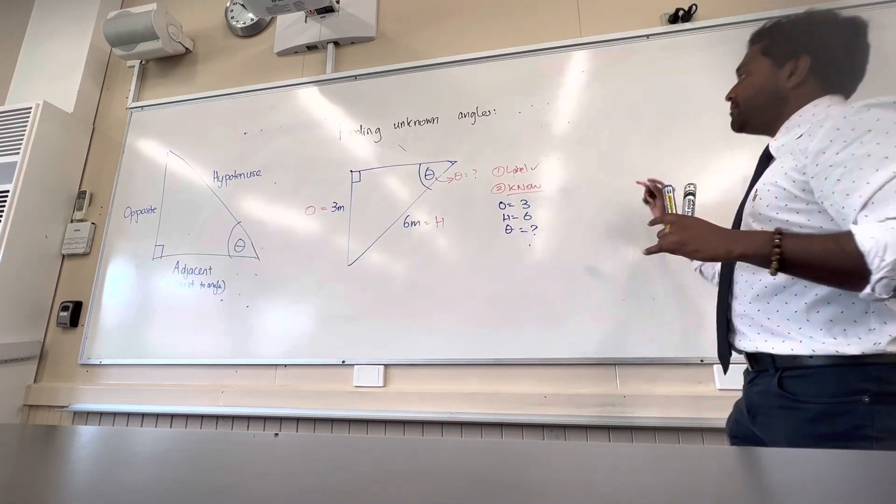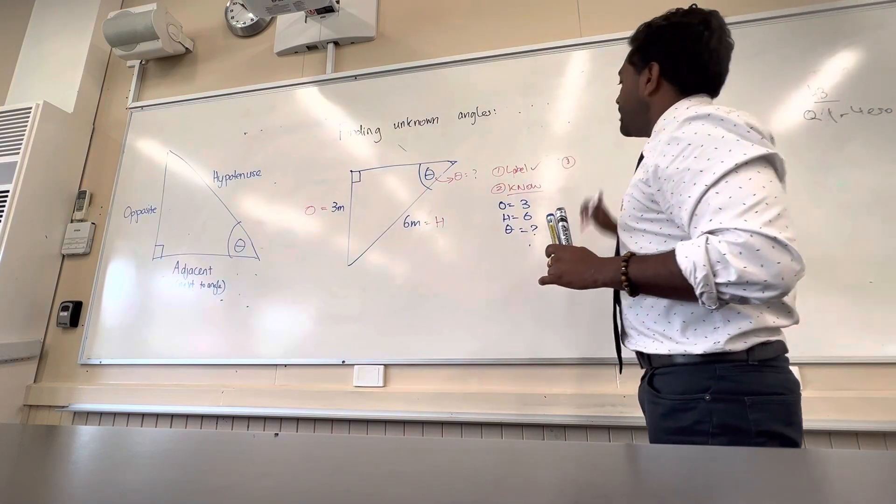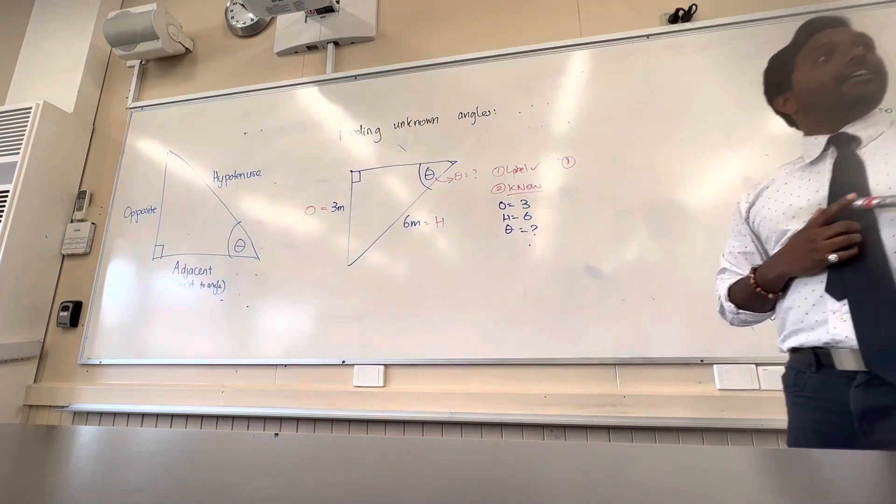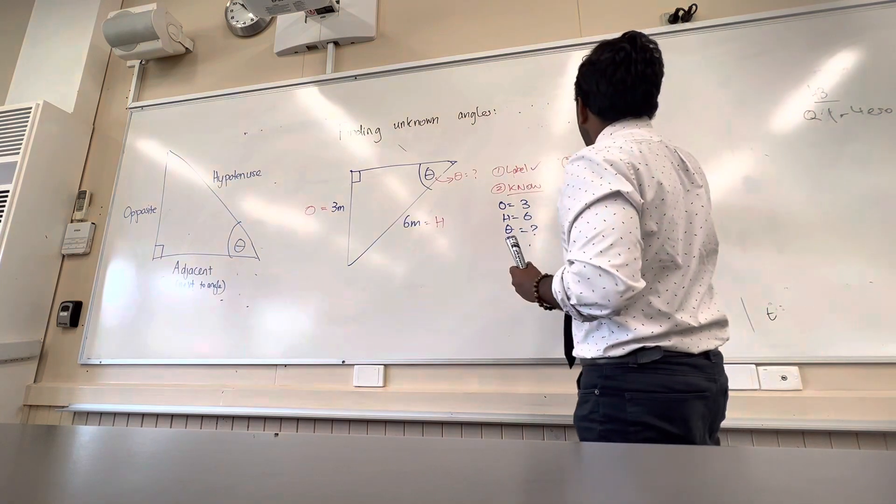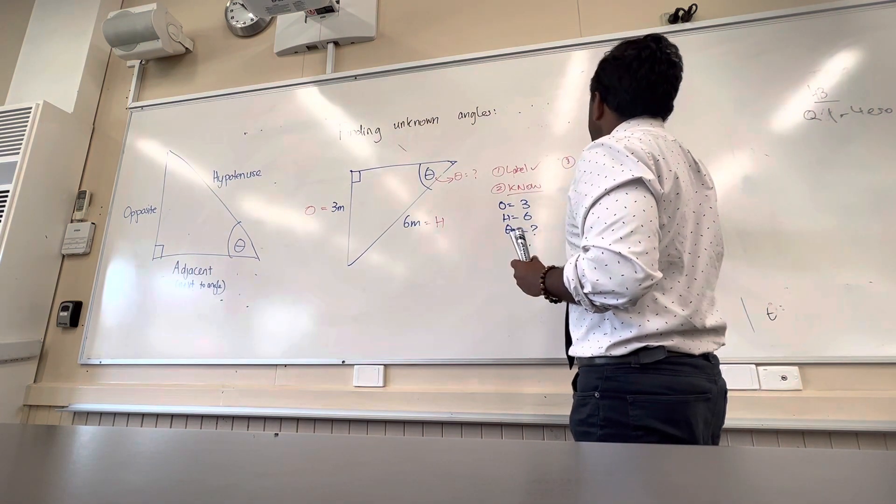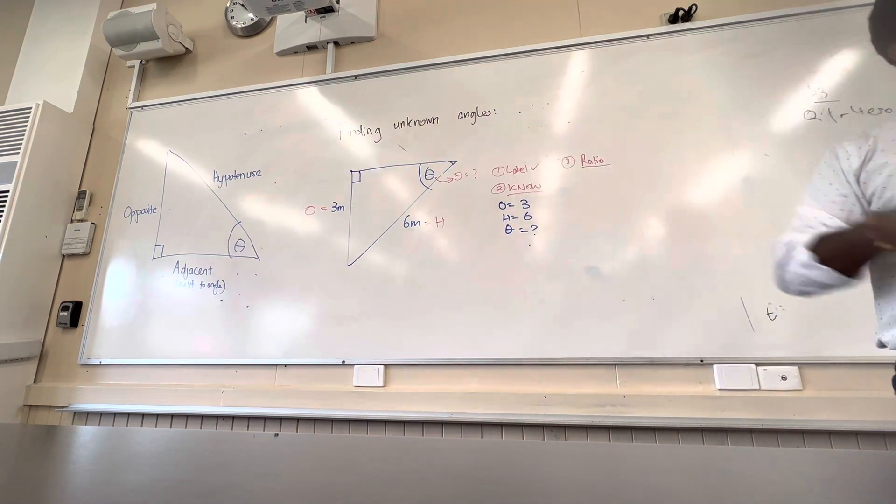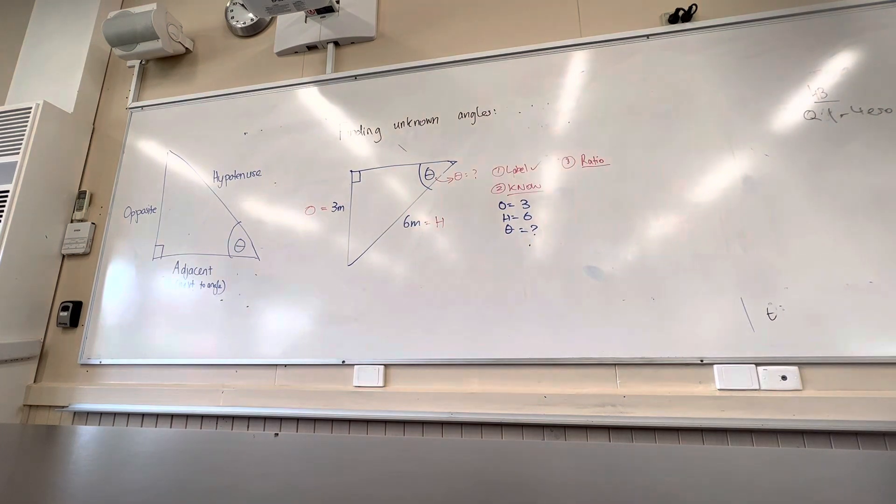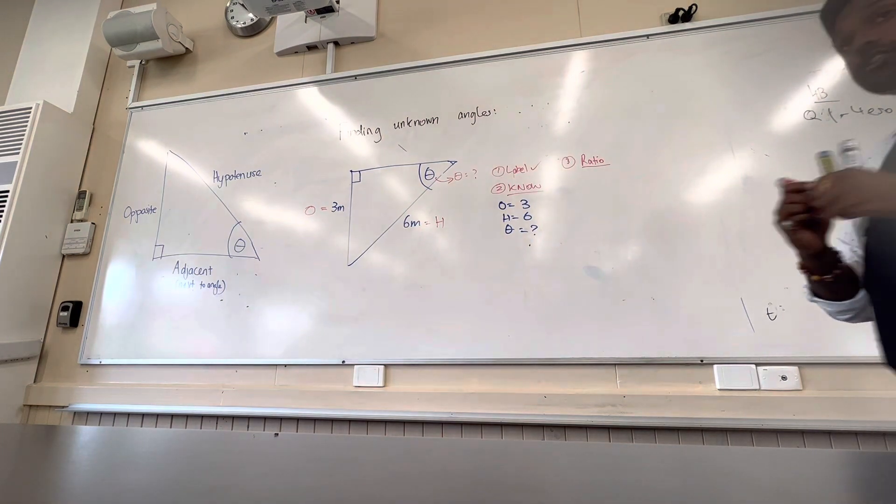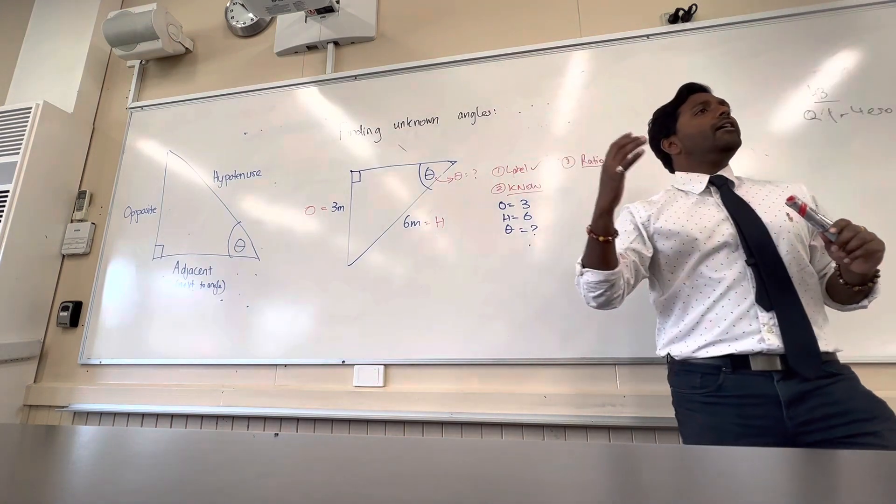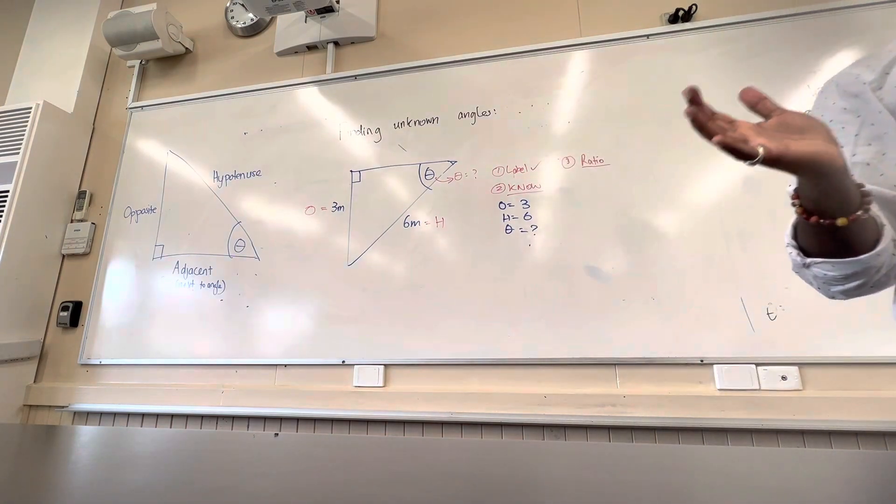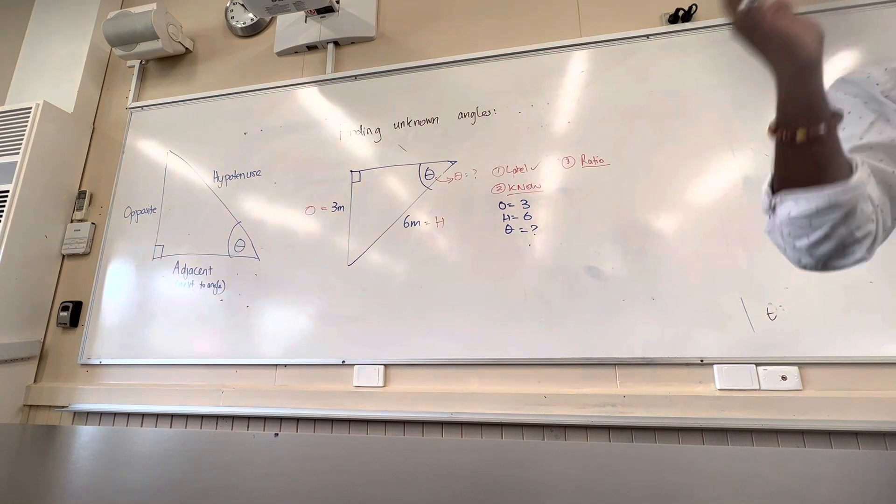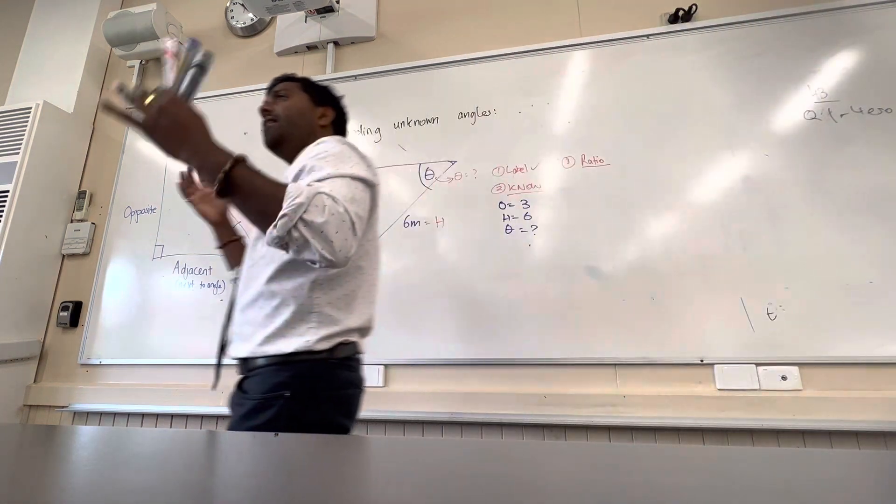What's our third step going to be then, Jude? Yeah, well done, good memory Jude. So you're going to write down the equation or trig ratio. So looking at O and H, what's the trig ratio going to be, Clementine? Soh, well done guys. Just remember you just did this topic, you just started, so if you're getting familiar with the trig ratios, it's going to be a process.